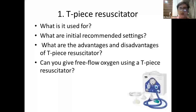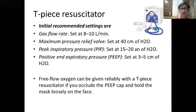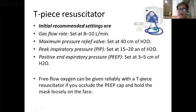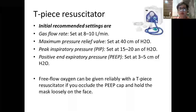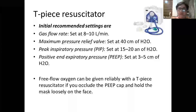The initial settings recommended for a T-piece resuscitator: gas flow rate of 8 to 10 liters per minute, maximum pressure relief valve set at 40 centimeters of water, PIP set at 15 to 20, and PEEP at 3 to 5 centimeters of water.